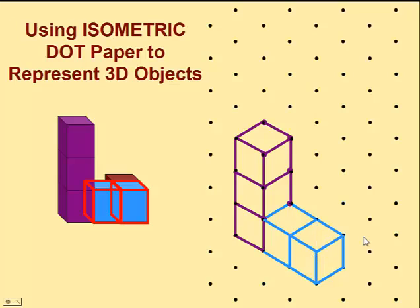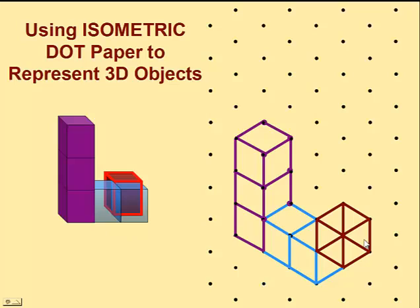Finally, we'll take our brown cube at the back, put it on our isometric dot paper and eliminate the invisible lines.